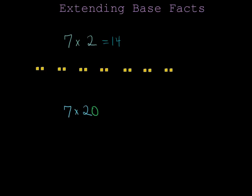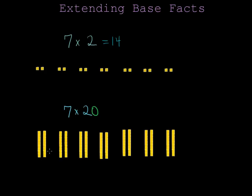Now, instead of 7 groups of 2, I'm going to have 7 groups of 20. So here's 10, 20, and here I have 7 groups of 20. So if I count by 20s, I'll have 20, 40, 60, 80, 100, 120, 140.